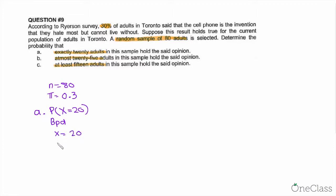Our n is 80, which is the random sample, and our probability of success is 0.3. When you execute, the answer is 0.0626. So for this question, it's 0.0626.